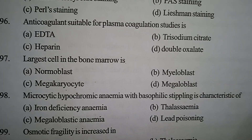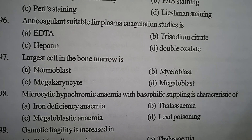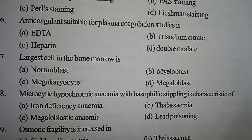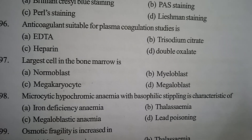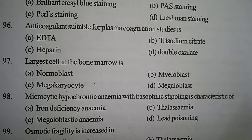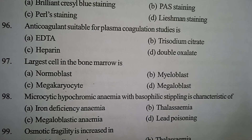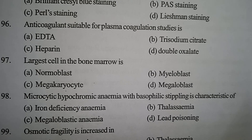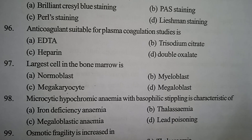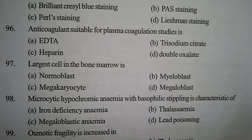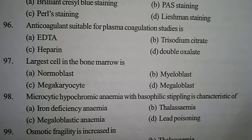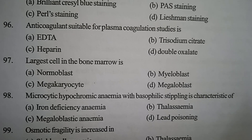Next one: the largest cell in the bone marrow is — Option A: normoblast. Option B: myeloblast. Option C: megakaryocyte. Option D: megaloblast. Correct answer: Option C, megakaryocyte.